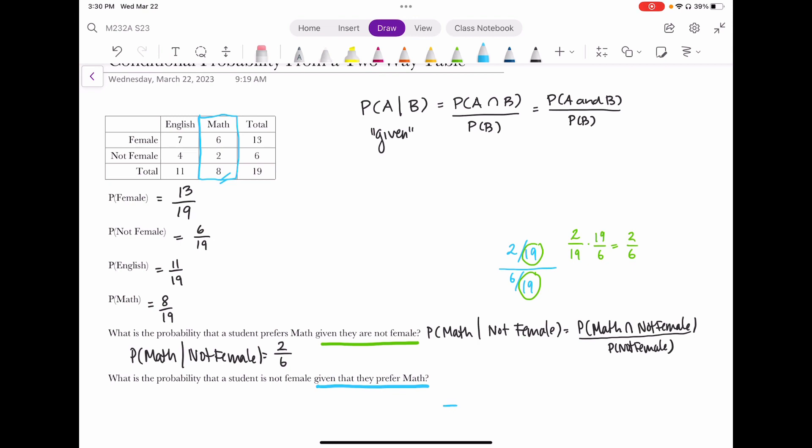So of those eight, how many are not female? Still two as before, but now I'm talking about two out of eight rather than two out of six. So this is the probability that I was talking about somebody who was not female given that they prefer math. And that was two out of eight.